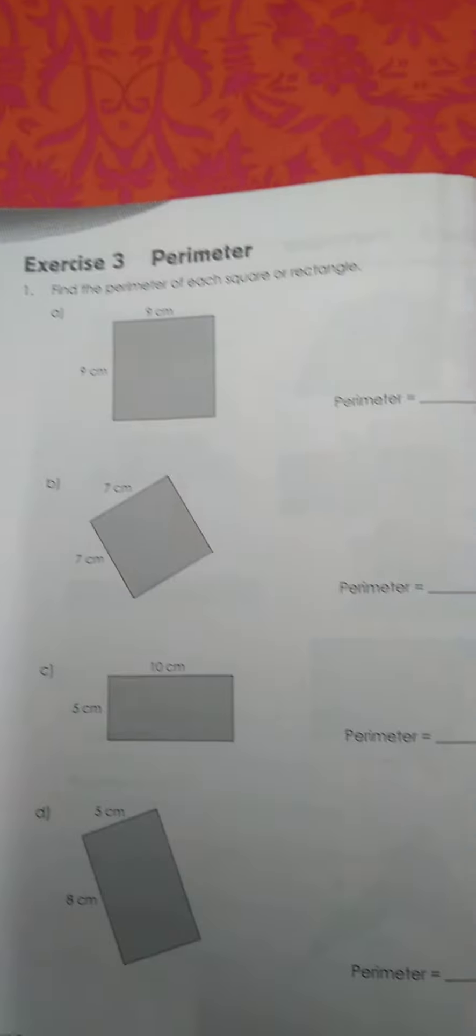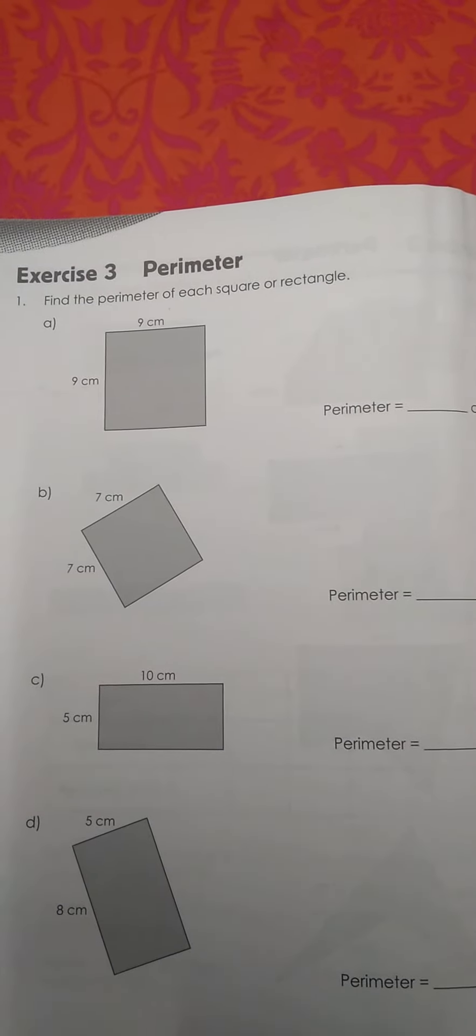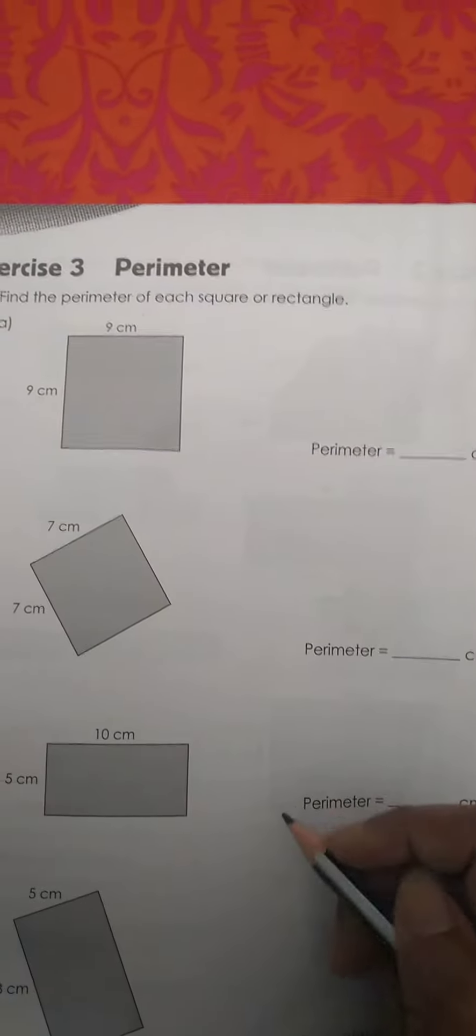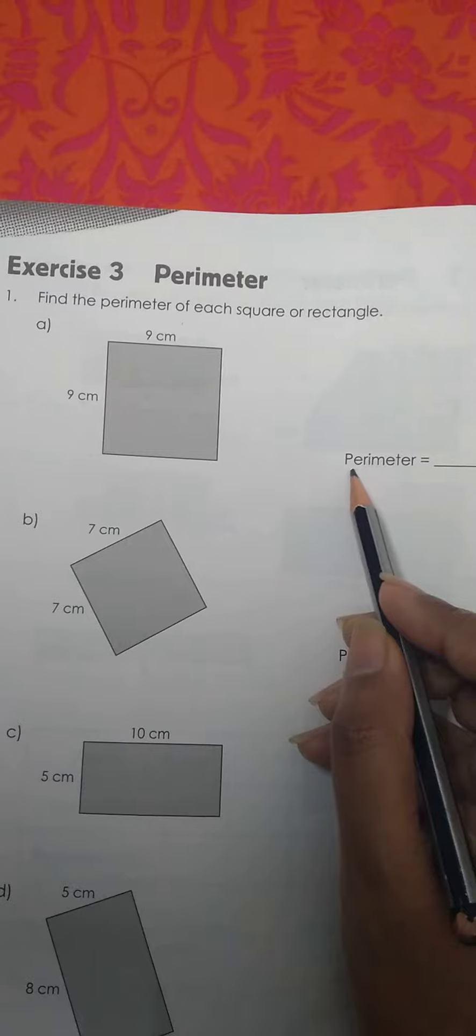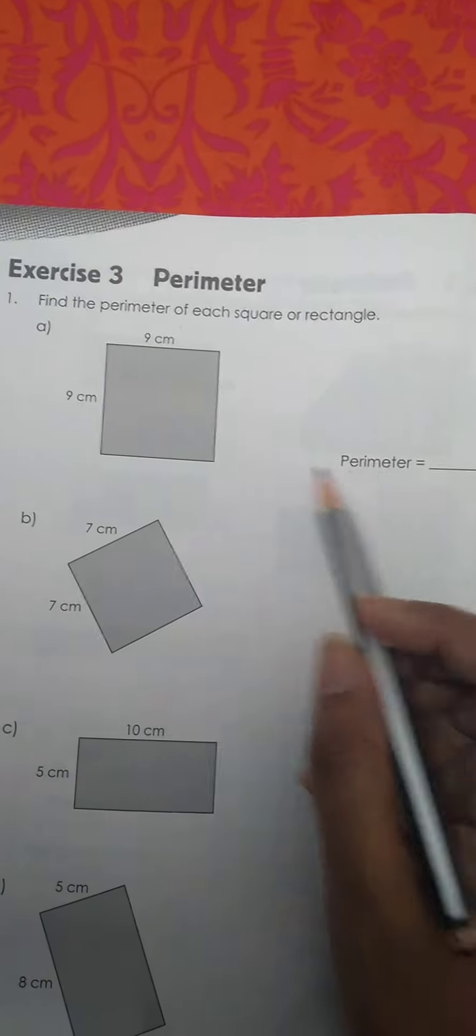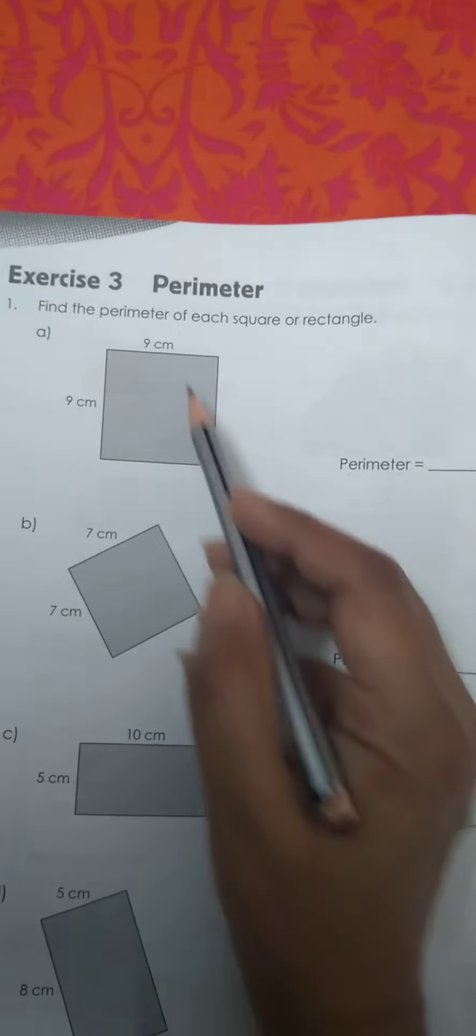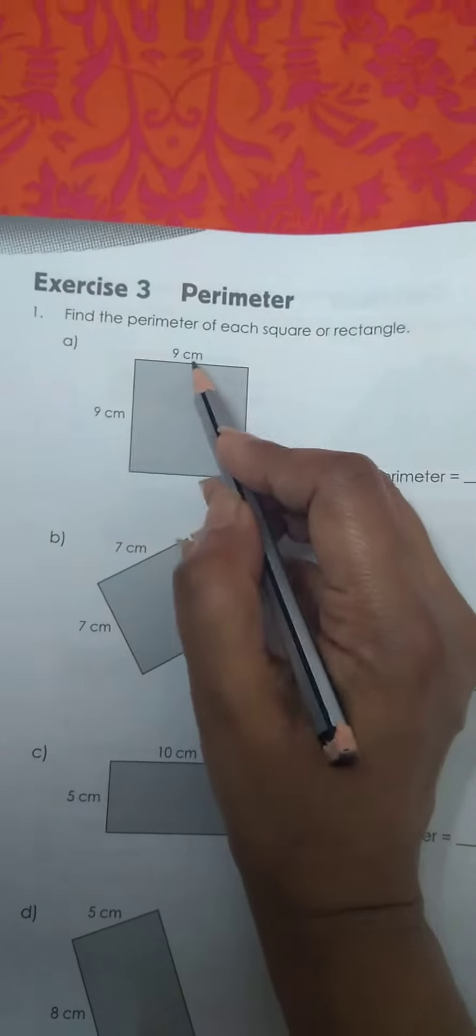Page number 112, Perimeter. Find the perimeter of each square or rectangle. Like I said last time, when you need to find the perimeter, you need to add all the sides. Now this is a square.